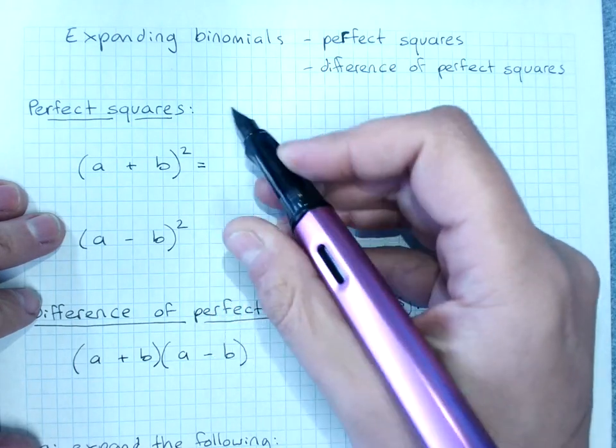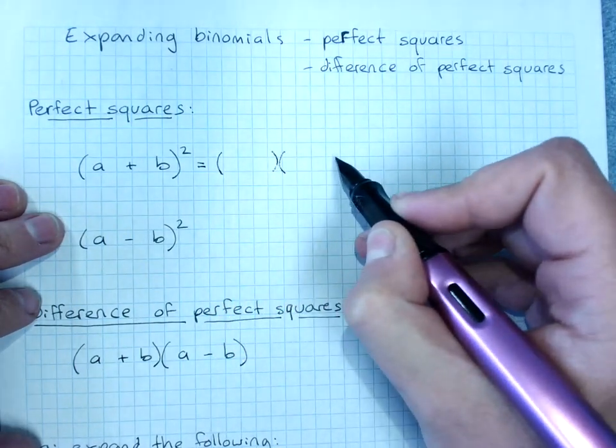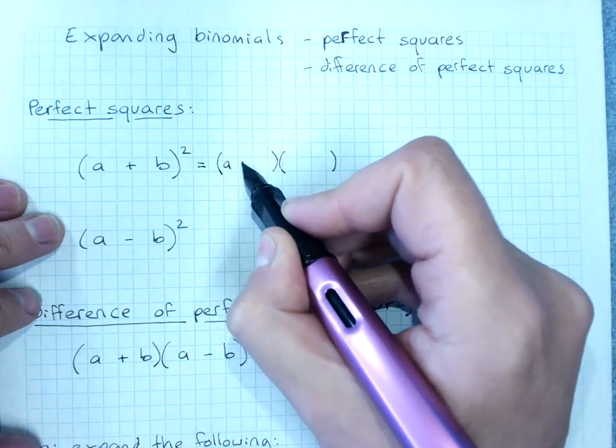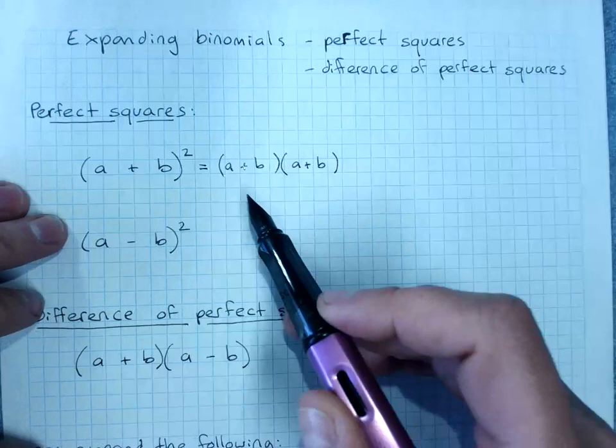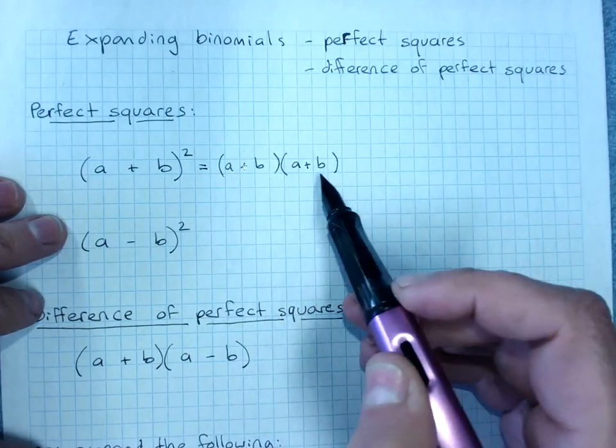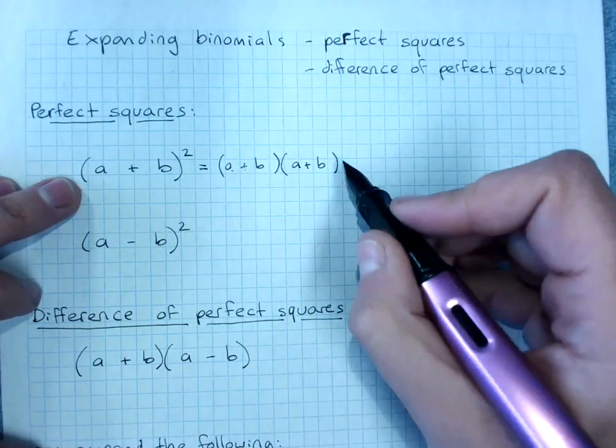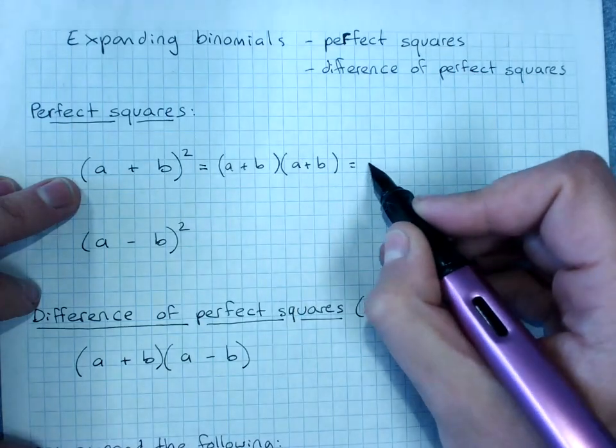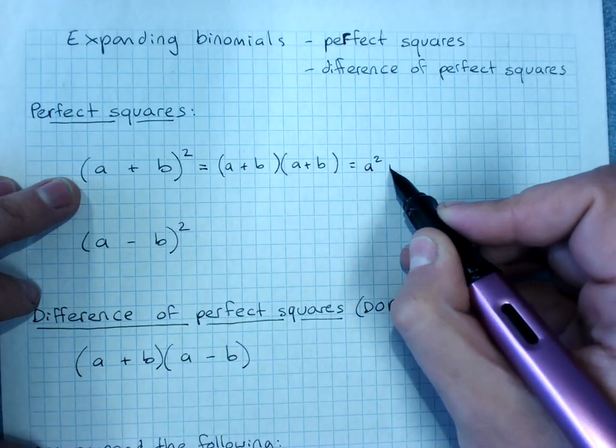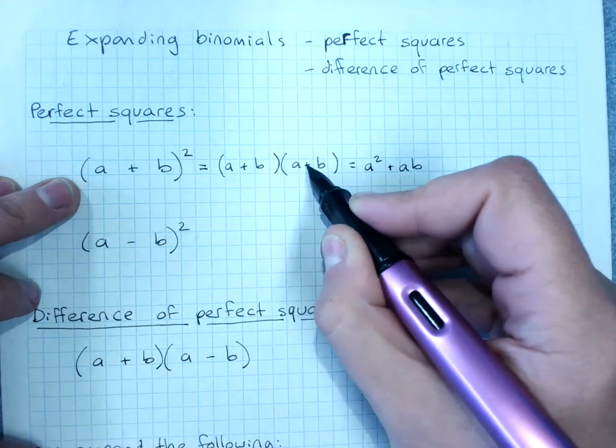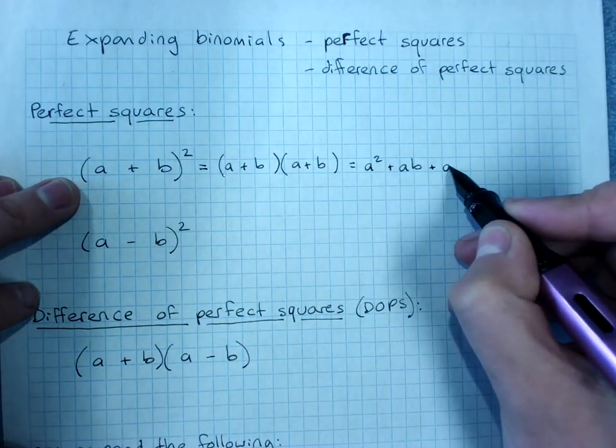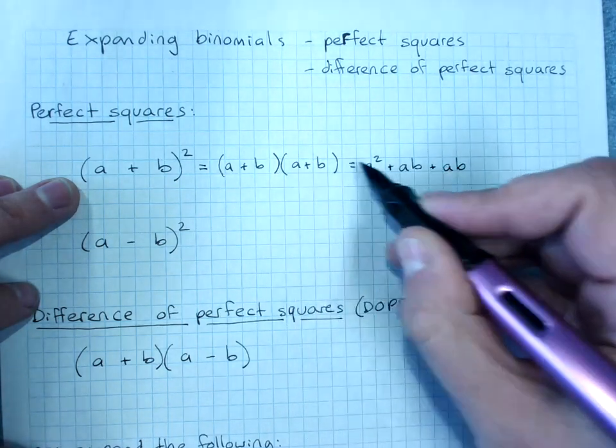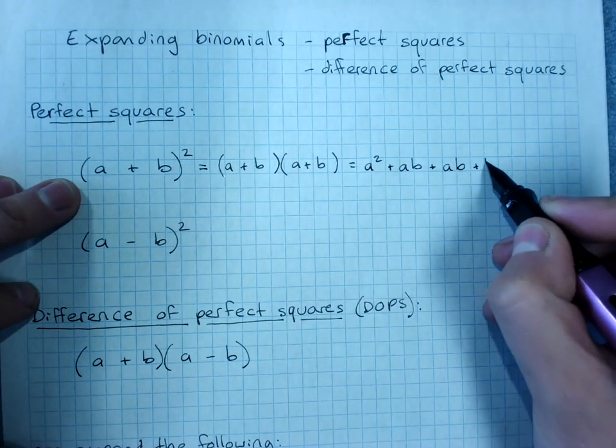If I want to expand that, you'd write it as (a+b)(a+b), quite obviously a plus b multiplied by a plus b. And we'll get a times a, a squared, a times b, b times a. Now b times a, if you remember, is the same as a times b, so I'm going to write ab. And b times b is b squared.